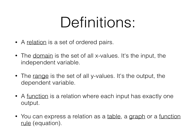A function is a specific kind of relation where each input has exactly one output — no matter what number you put in, that number only has one different number coming out. You can express a relation or function as a table, a graph, or as a function rule, which is an equation. If none of the x values repeat — all inputs have exactly one output — it's a function.